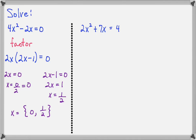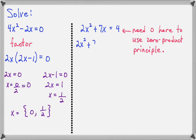On the other hand, this equation, 2x squared plus 7x equals 4, I cannot factor out the GCF of x here because I don't have 0 over here on the right. I must start with 0 on the right side. So let's do minus 4 on both sides.